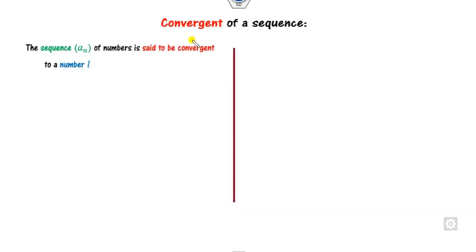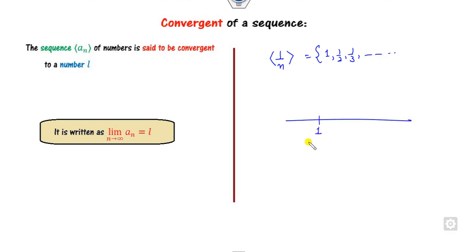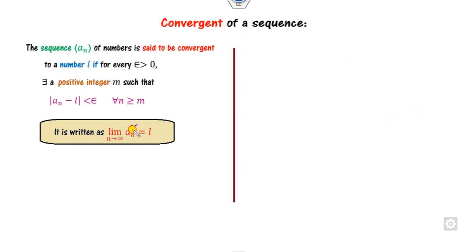Now, how can you say a sequence is convergent formally? A sequence a_n is said to be convergent to the number l. For example, consider the sequence 1/n — you get 1, then 1/2, 1/3, and so on. So as n approaches infinity, the terms go: 1, 1/2, 1/3, and so on. The sequence converges because as n approaches infinity, the distance between successive terms becomes very, very small.